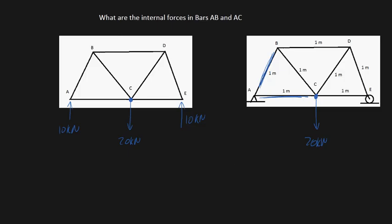In order to do this problem we're going to have to rely on something called method of joints. Method of joints is really just the process of separating a particular joint from the rest of the truss and drawing a free body diagram on it. So let's do that.